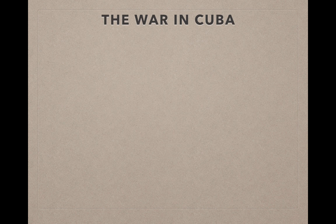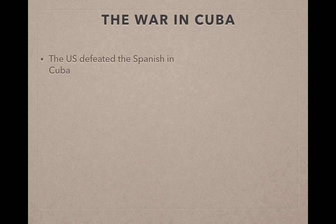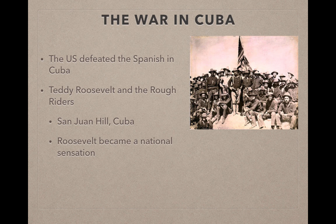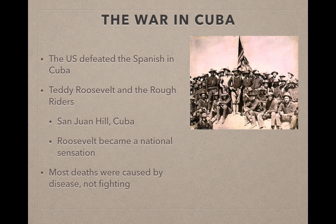Moving to the second front of the Spanish-American War, much closer to the continental United States — the island of Cuba was a Spanish territory roughly only 90 miles off the coast of the Florida Keys. The U.S. defeated the Spanish in Cuba, and Teddy Roosevelt became very famous for his actions and the creation of his unit known as the Rough Riders at the Battle of San Juan Hill. Roosevelt became a national hero. Most of the deaths during the Spanish-American War were caused by disease, particularly due to the tropical climate, rather than combat deaths.